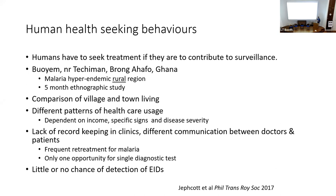I want to talk about a study that my colleague Freya Jeffcutt did looking at health-seeking behaviour in central Ghana — an area of West-Central Africa thought to have some of the better primary health care. She did a five-month ethnographic study with a small community and looked at health-seeking behaviours. To summarise: the way people interface with primary health care services there currently provides little or no opportunity for detection of emerging infectious diseases. The only things that would trigger an intervention is if there appeared to be some form of human-to-human transmission going on. I think this is really important qualitative social data to frame what we think about early detection.